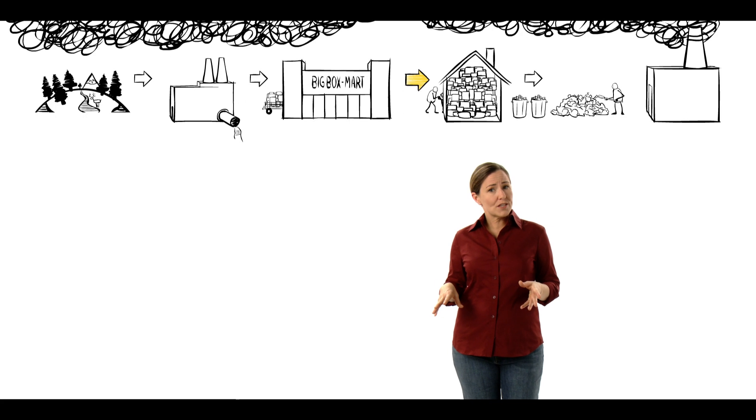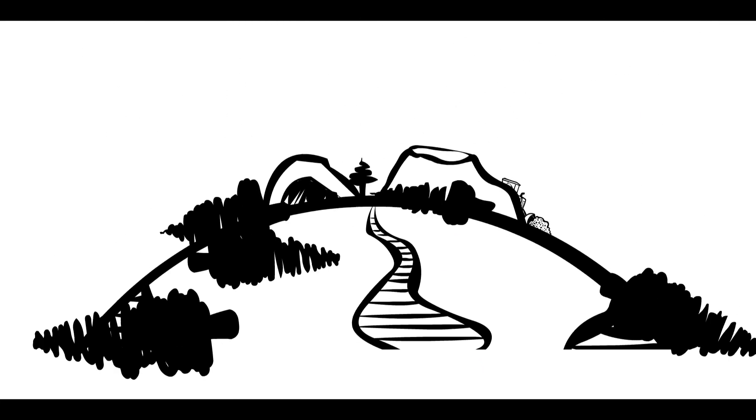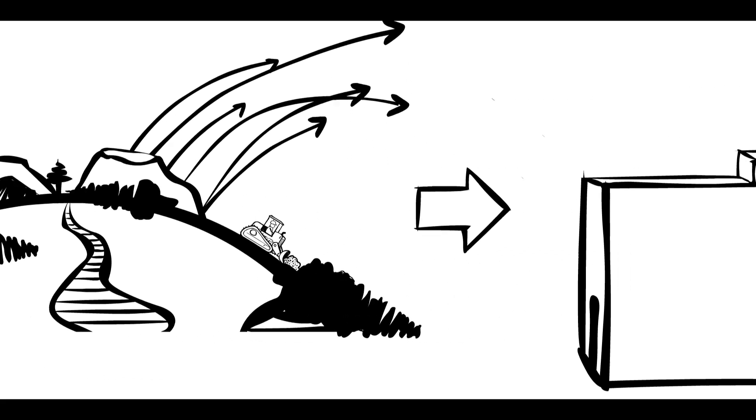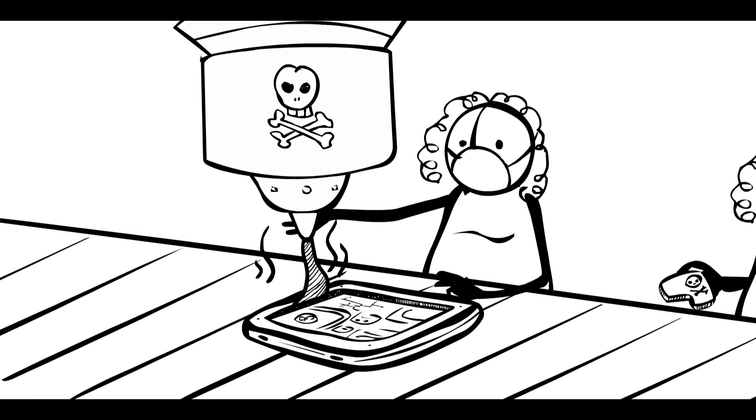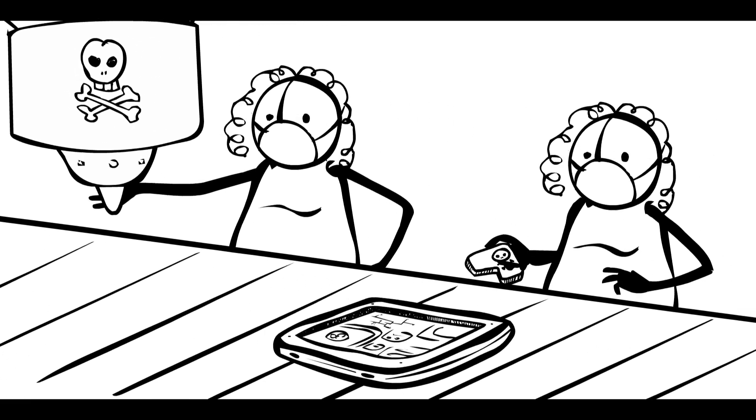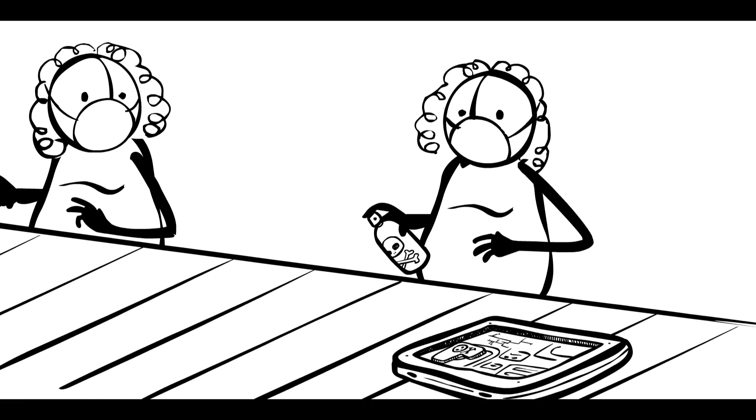You see, electronics start where most stuff starts, in mines and factories. Many of our gadgets are made from a thousand different materials, shipped from around the world to assembly plants. There workers turn them into products using loads of toxic chemicals, like PVC, mercury, solvents and flame retardants.